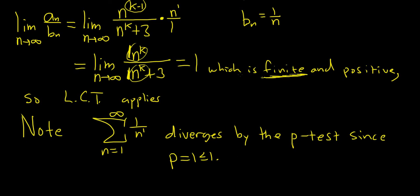So this means that our original series will diverge by the limit comparison test. So thus, our OG series, OG means original, will diverge by the limit comparison test. So by the LCT.